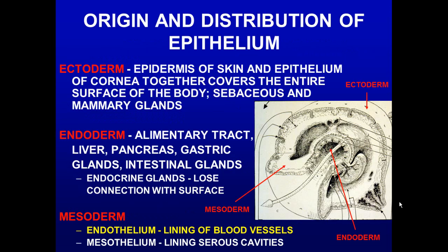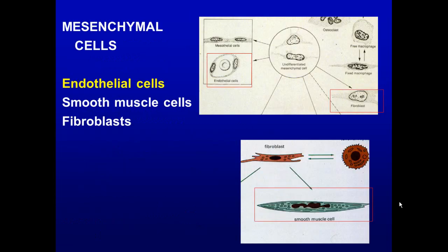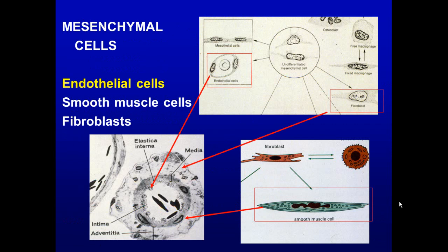Endothelium, which lines blood vessels, comes from the mesoderm. Endothelial cells, like smooth muscle cells and fibroblasts, come from undifferentiated connective tissue cells. Together these three cell types go on to make blood vessels — you have the adventitia, the media, and the intima, produced by these undifferentiated connective tissue cells.